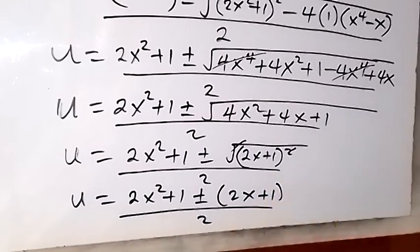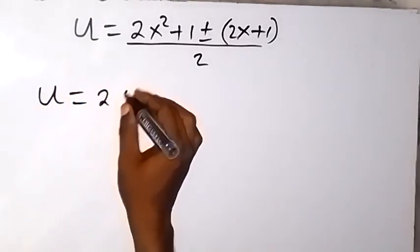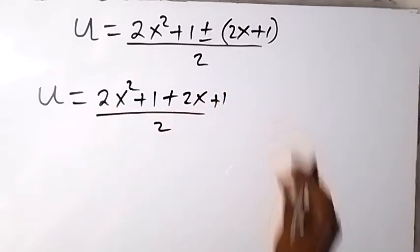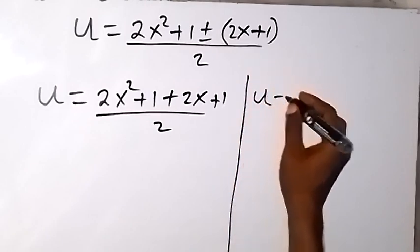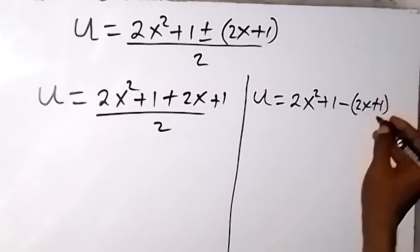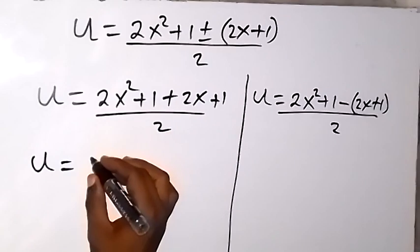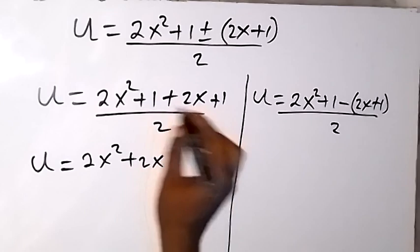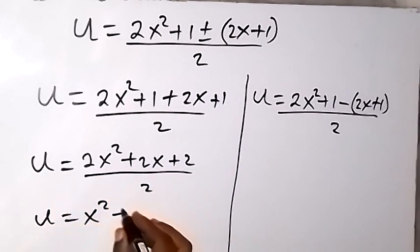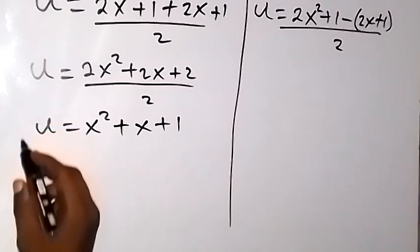We have two values of u. Case 1: u equals (2x squared plus 1 plus 2x plus 1) over 2, which simplifies to (2x squared plus 2x plus 2) over 2, giving u equals x squared plus x plus 1.